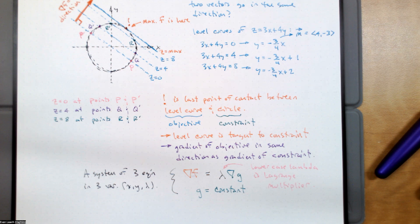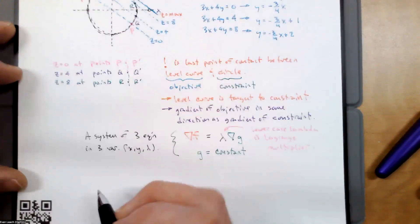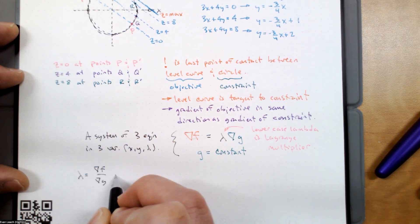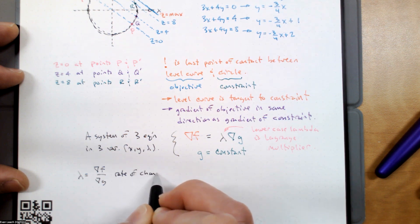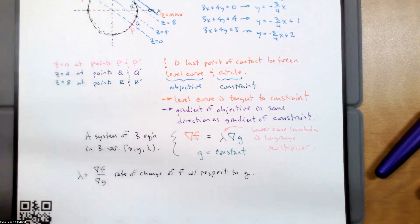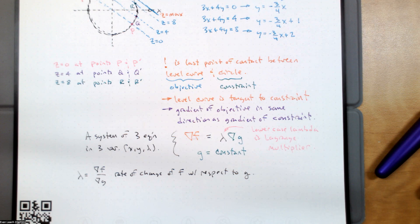The Lagrange multiplier does tell us information. If I solve for the Lagrange multiplier, it says δf/δg — it tells us how much the function is changing for some small change in the constraint. If I increase the constraint from 4 to 4.1, say, this will tell us approximately how much the function changes. If we make some change in the constraints, we'll get some change in the function, and this gives us approximately how much.